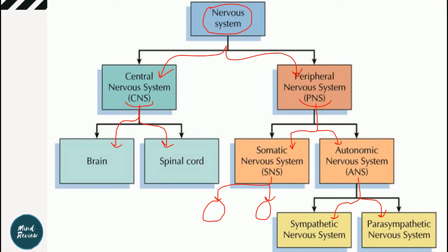Let's revise again: nervous system → central nervous system and peripheral nervous system. What is included in the central nervous system? Our brain and spinal cord. Peripheral nervous system is further of two types: somatic nervous system (SNS) and autonomic nervous system (ANS). Somatic nervous system is further of two types: sensory system and motor system. Autonomic nervous system is also of two types: sympathetic and parasympathetic nervous system.